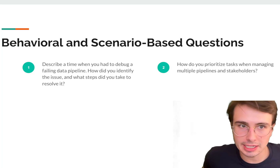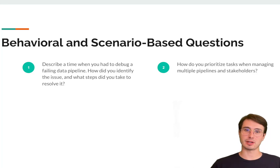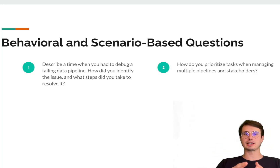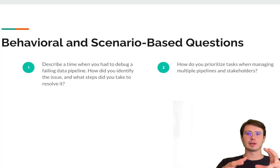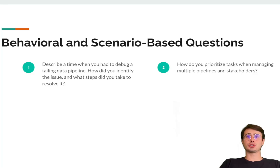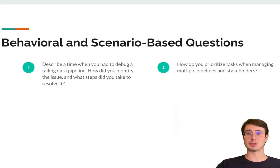Next, you're going to have a category of behavioral and scenario-based questions where they're trying to assess how you're going to work in the type of environment this company offers and how your mindset works when approaching a problem. A common question is: describe a time when you had to debug a failing data pipeline — how did you identify the issue, what steps did you take to resolve it, what did your workflow look like? They want to understand how does this person work and is that compatible with how we work on this team. A more general important question is: how do you prioritize tasks when managing multiple pipelines and stakeholders? This is really a test of how efficient you are at working in a large business where you're going to be pulled in a lot of different directions. Being able to properly triage and assess what the priority is right now is crucial to being an effective data engineer in a fast-paced organization.